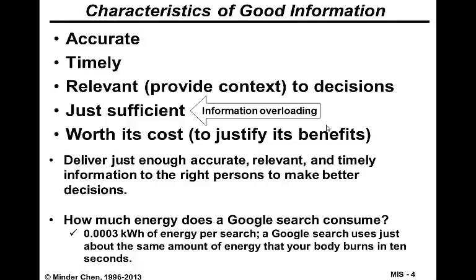The whole purpose of building an information system is to provide good information to help us make better decisions. So we need to ask ourselves: what are the characteristics of good information? First, good information is accurate. Second, it will be delivered to us in a timely manner — available when we need it to make a decision, hopefully in real-time.